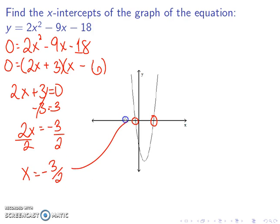That's going to correspond to this one. I also have x minus 6 equal to 0, and adding 6 to both sides gives me x equals 6. That'll correspond to this intercept.